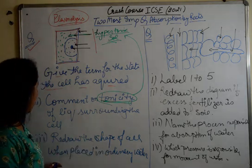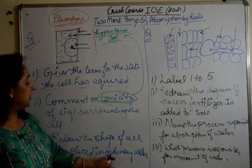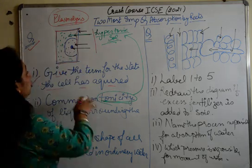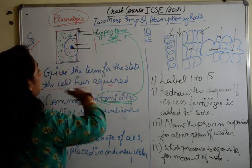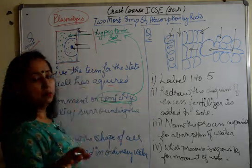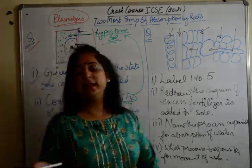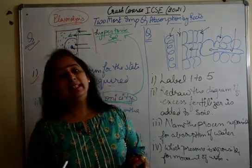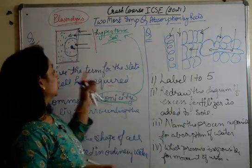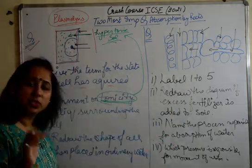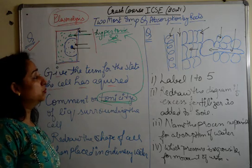Another question is: redraw the diagram when the cell is placed in ordinary water. You will redraw the diagram without the plasmolysis state, with a proper plant cell labelling. This is a very important question from the chapter Absorption by Roots.